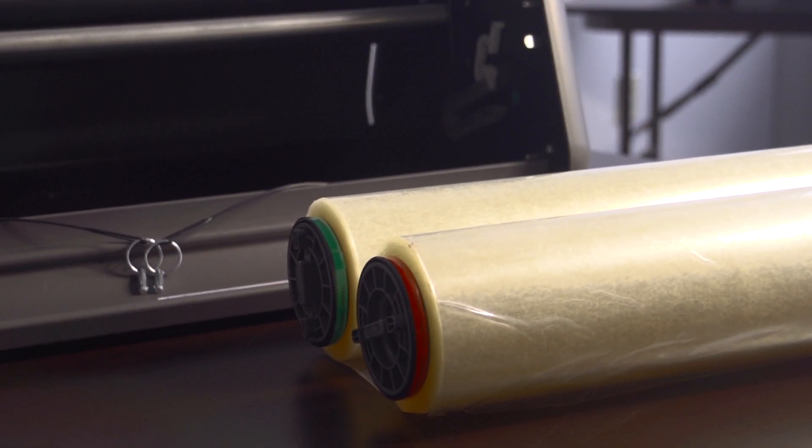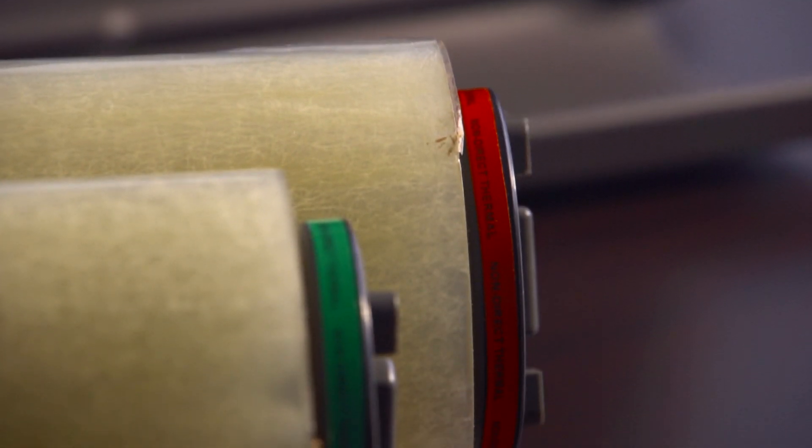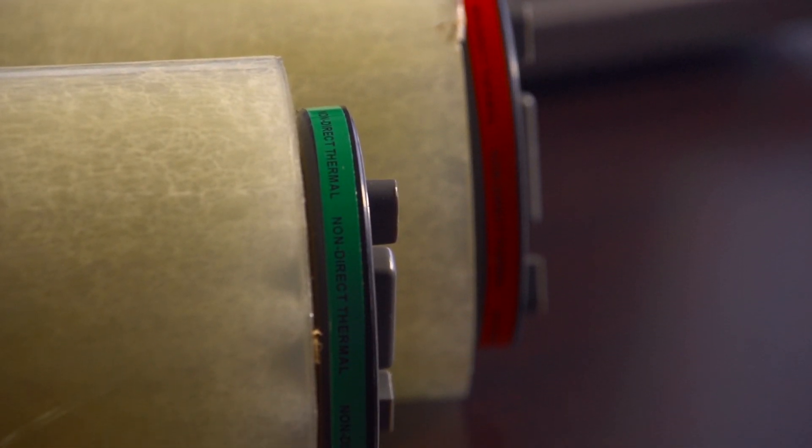Rhino supply comes in a set of two rolls. Each roll is marked with a green band on one end and a red band on the other to help with loading.